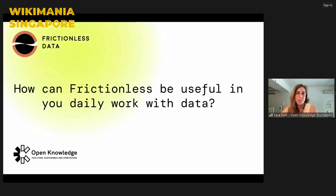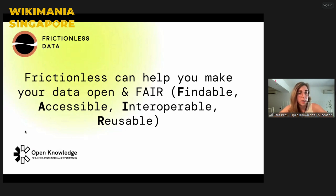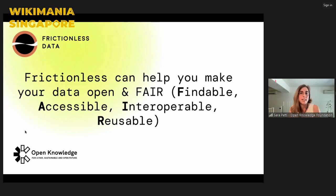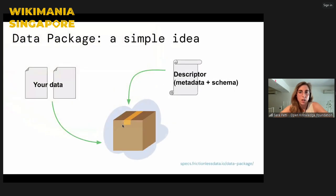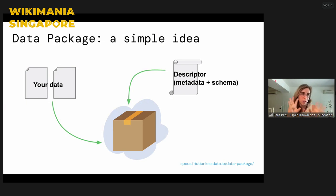How exactly can you use frictionless and how can it be useful in your daily work with data? Frictionless is very helpful because it can help you make your data open and FAIR — Findable, Accessible, Interoperable, and Reusable. If you want a good guide for this, I would invite you to visit a project called The Turing Way, which is very helpful. Just a reminder that open data and FAIR data are not synonyms. Data can be open without being FAIR and it can be FAIR without being open. And frictionless helps in both ways.